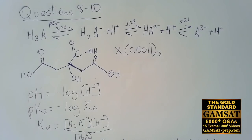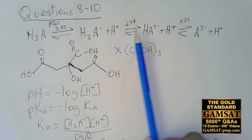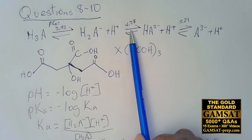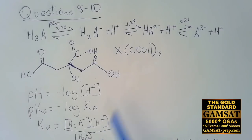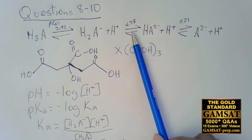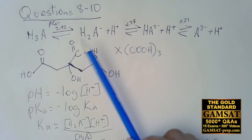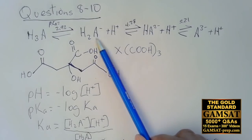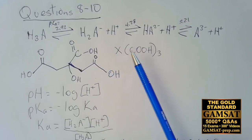So that's question 8, answer C. Moving on to question 9: at what pH are the concentrations of the minus one and minus two species equal? They will be exactly equal at pH 4.28, because that is the pKa — the pH at equilibrium where the concentration of the conjugate acid and conjugate base are equivalent.